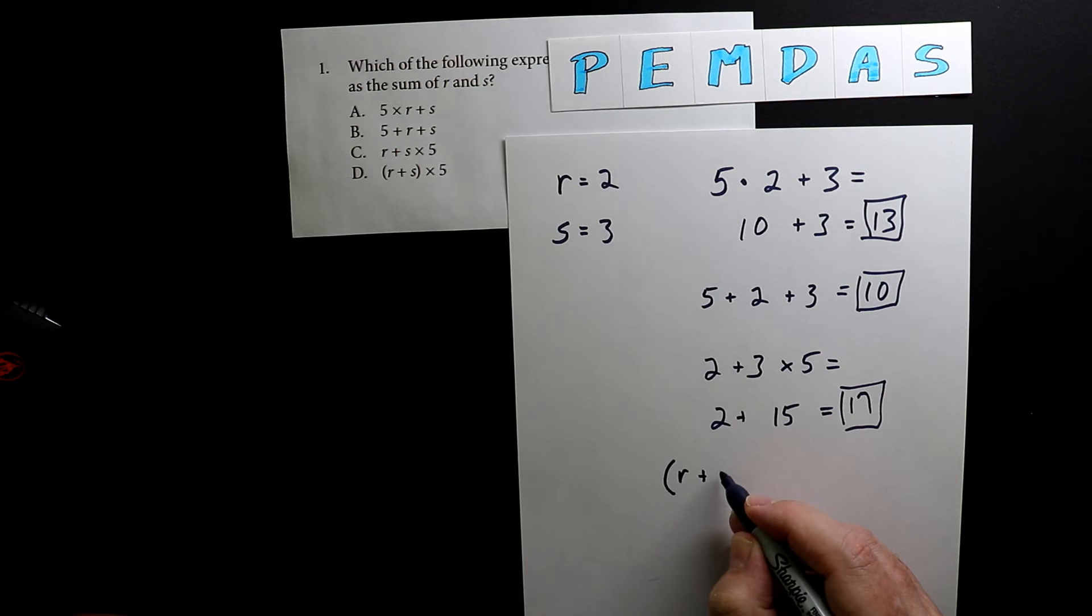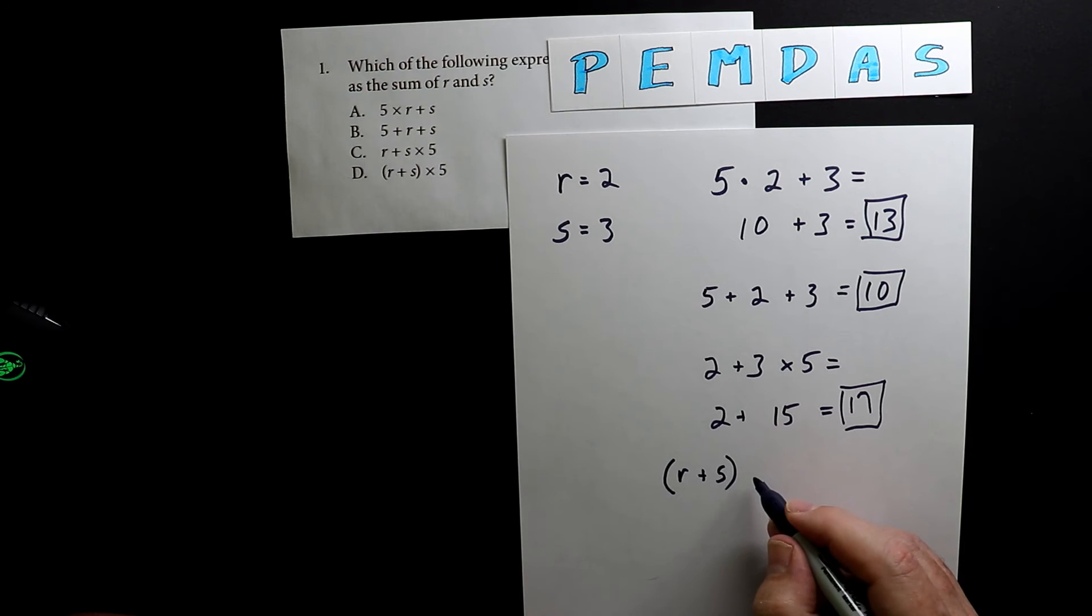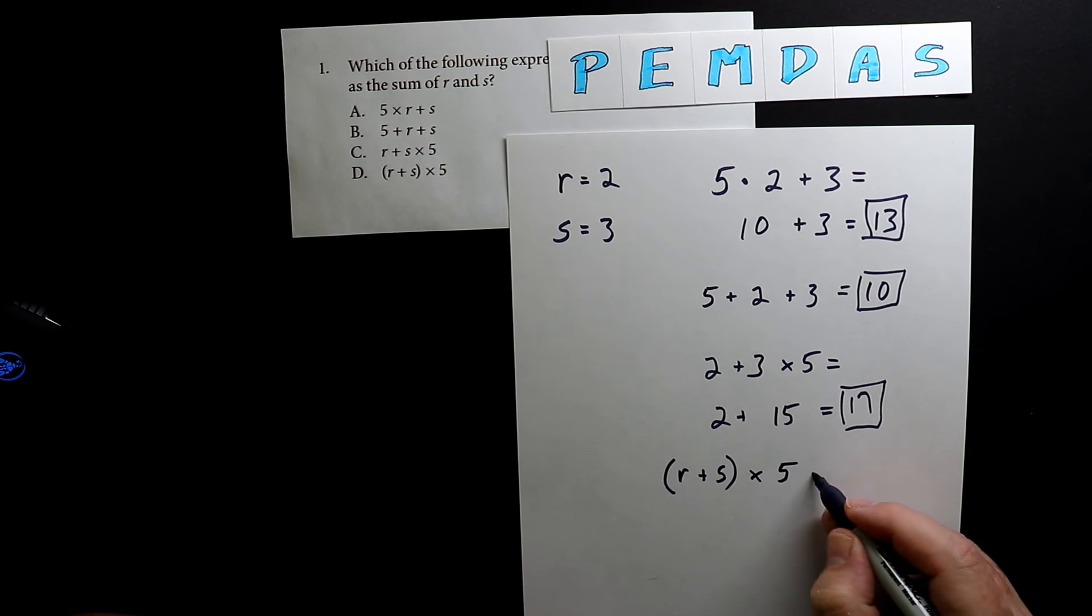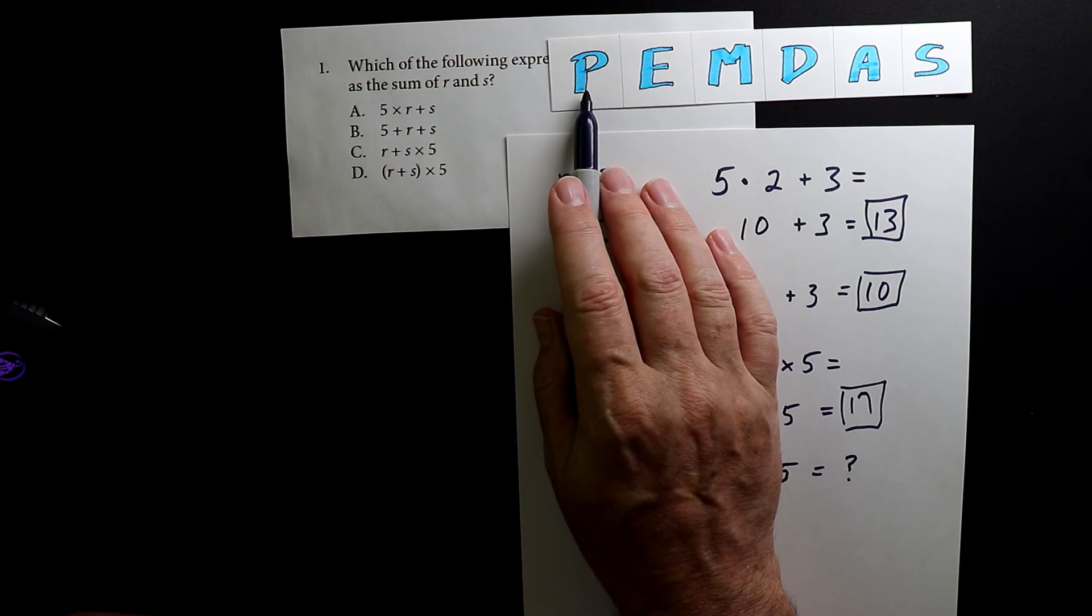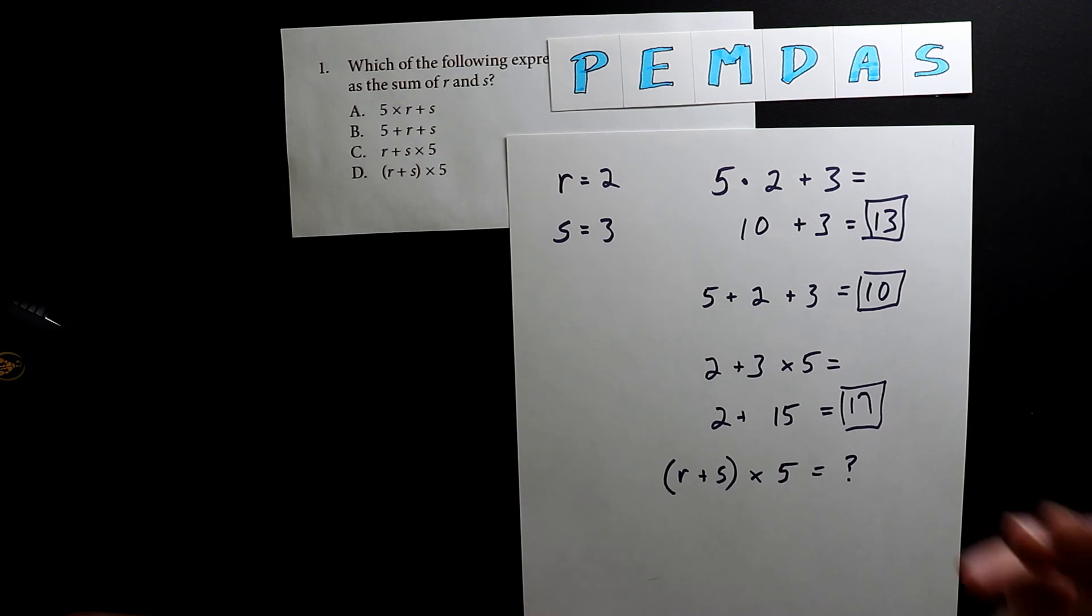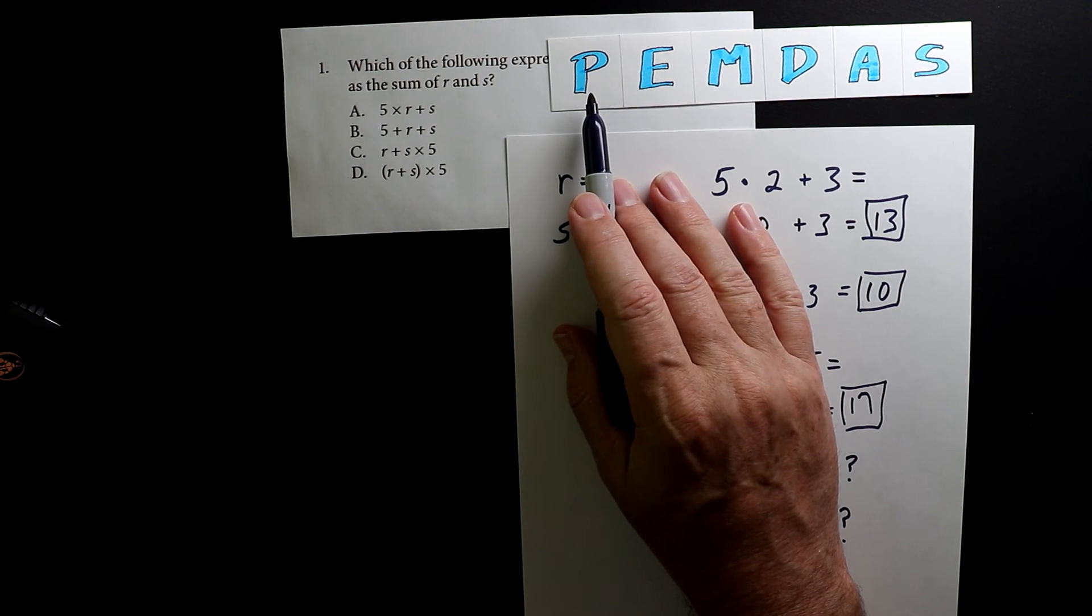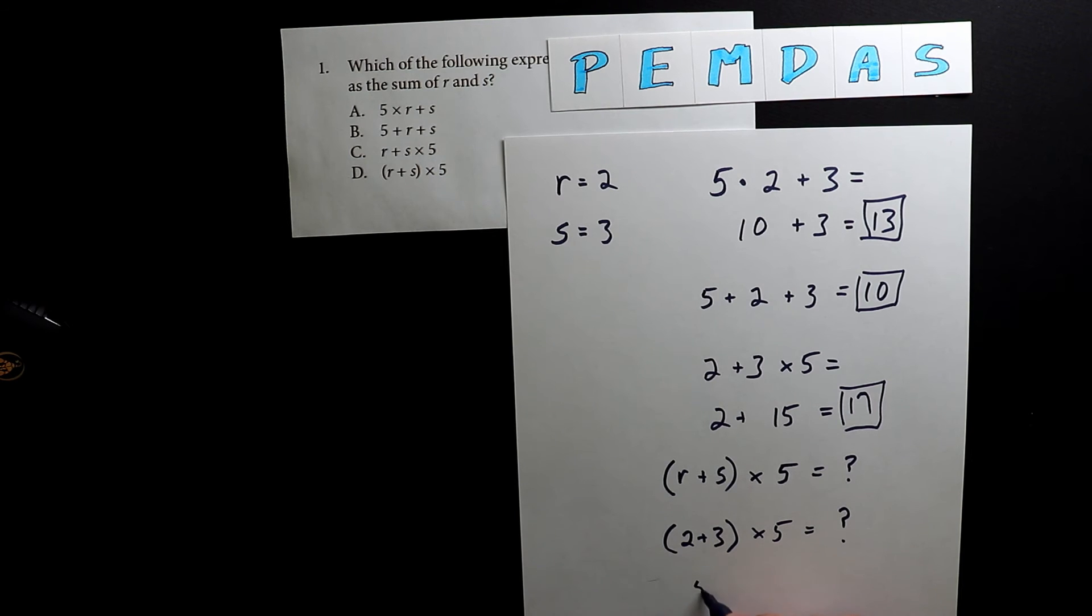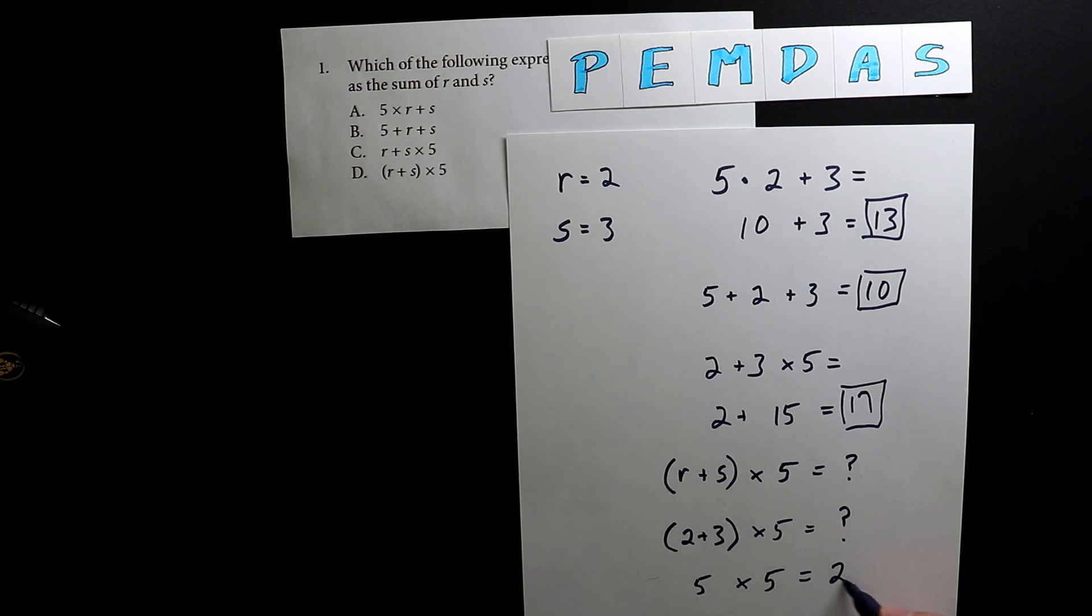So r plus s in parentheses times 5 equals a mystery. When doing the order of operations, the first letter is P for parentheses. In this case, r and s equals 2 plus 3. Since we're using the order of operations, we do the parentheses first. Two plus 3 is 5, then we multiply by 5, and 5 times 5 is 25.